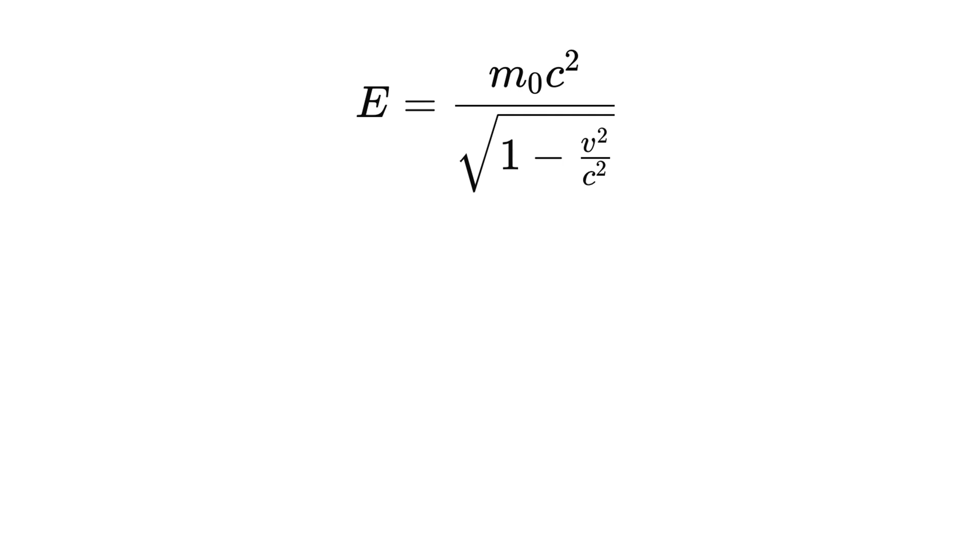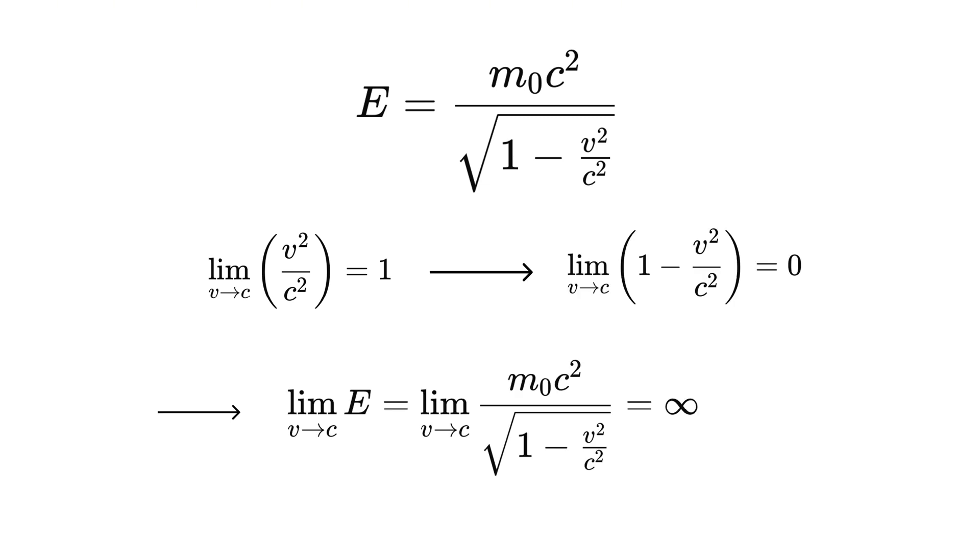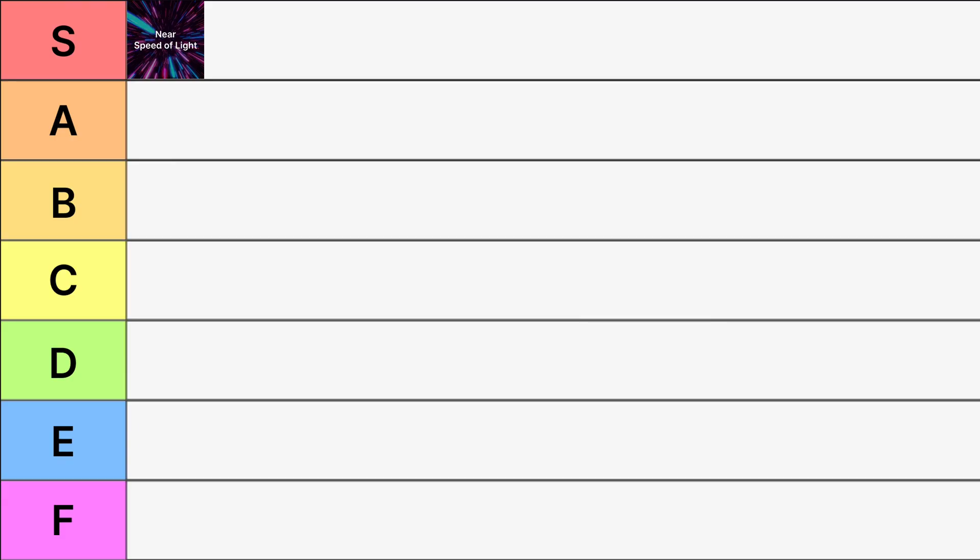Here's a bit of the science behind it. Combining the equations, we get this. As velocity gets closer and closer to the speed of light, this approaches one. Then this approaches zero. As a result, the energy approaches infinity. And in the real world, infinite energy sources just don't exist. The faster than light travel seems pretty impossible, so F-tier.